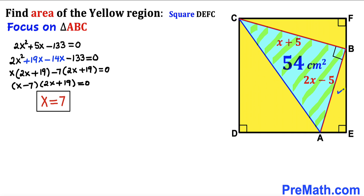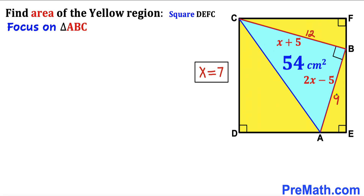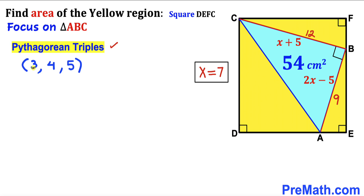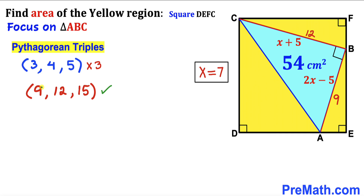Substituting x = 7: side AB = 2(7) − 5 = 9 cm, and side BC = 7 + 5 = 12 cm. Recognizing the Pythagorean triplet 3-4-5 scaled by 3 gives us 9, 12, 15 — so the hypotenuse AC turns out to be 15 cm.